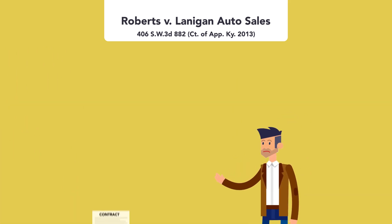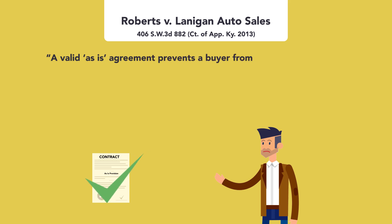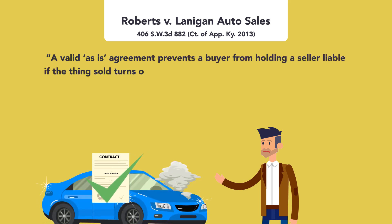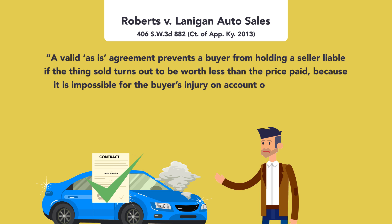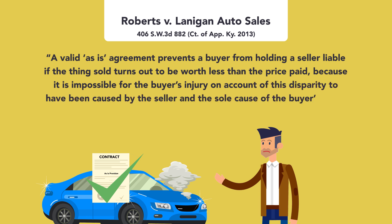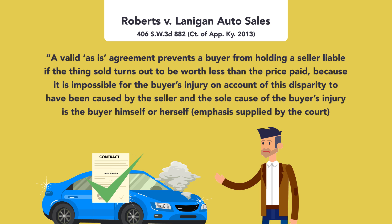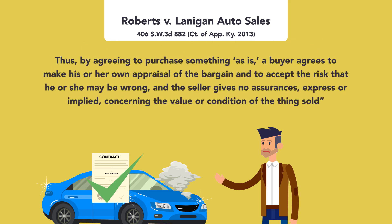The rationale was further explained: a valid As-Is agreement prevents a buyer from holding a seller liable if the thing sold turns out to be worth less than the price paid, because it is impossible for the buyer's injury on account of this disparity to have been caused by the seller, and the sole cause of the buyer's injury is the buyer himself or herself — emphasis supplied by the court. Thus, by agreeing to purchase something as-is, a buyer agrees to make his or her own appraisal of the bargain, and to accept the risk that he or she may be wrong, and the seller gives no assurances, express or implied, concerning the value or condition of the thing sold. Unquote.